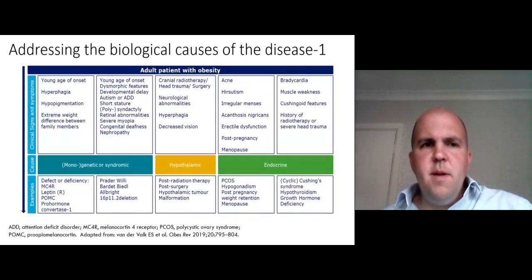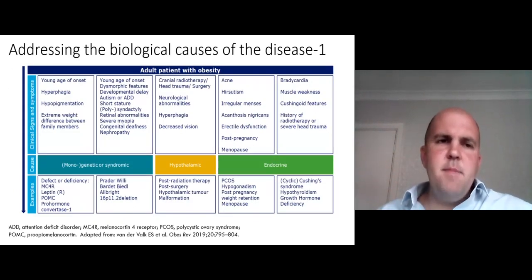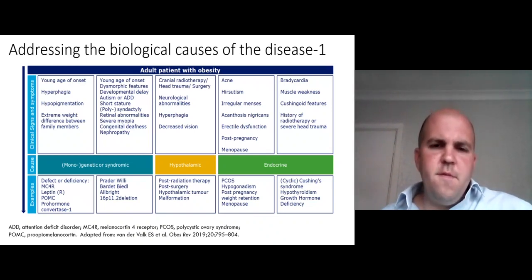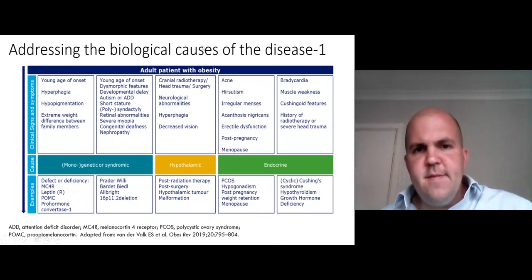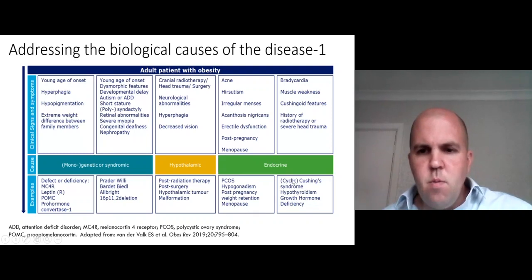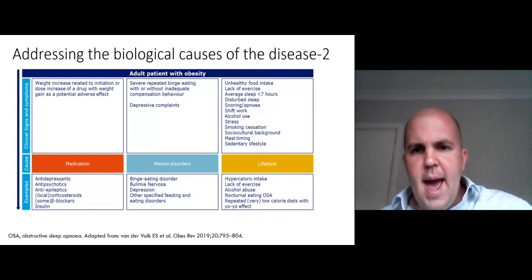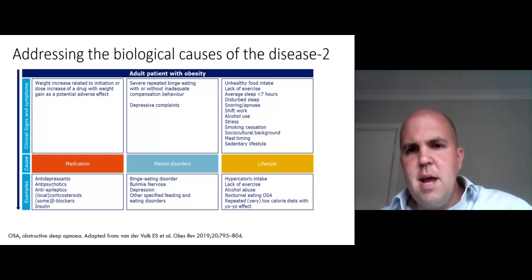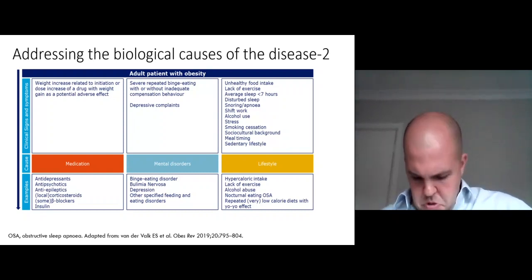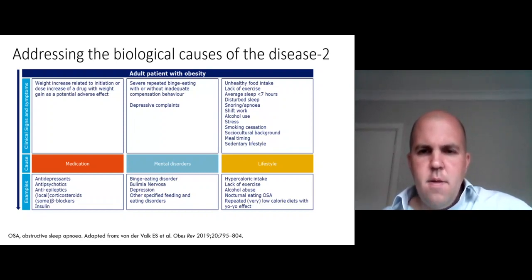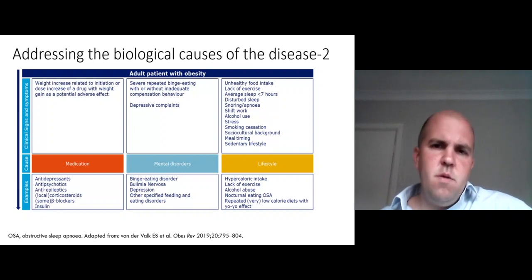Let's look at a few other biological determinants. There are comparatively rare genetic forms of obesity, various brain conditions, patients who've had brain operations or radiotherapy, and lots of endocrine conditions associated with weight gain. There are medications associated with weight gain, some of which could potentially be amended, some of which are necessary to continue. Mental health, fragmented sleep, short sleep duration, alcohol, shift work, and stress are also relevant. When people stop smoking there's typically weight gain, but clearly the health benefit of quitting far outweighs that.